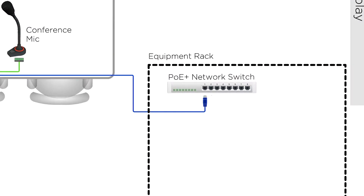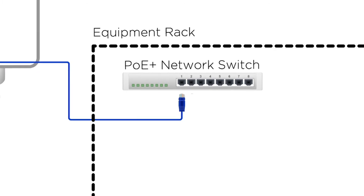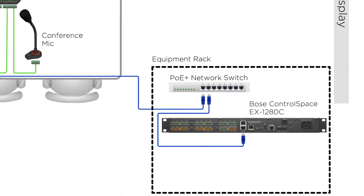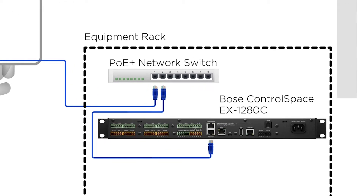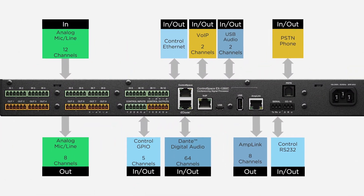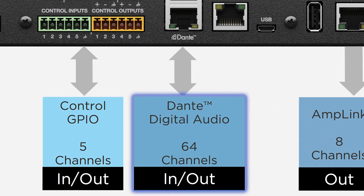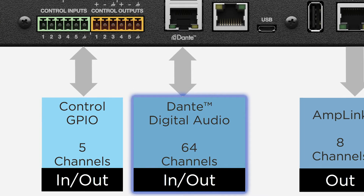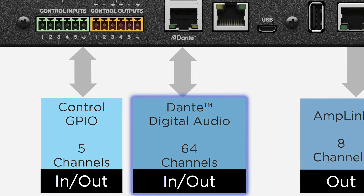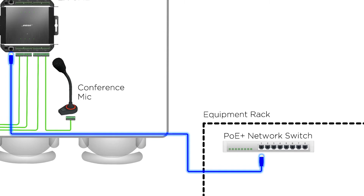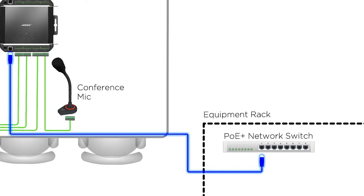The single network cable plugs into a standard PoE Plus network switch, which powers the table endpoints. From the switch, a single network cable connects to the powerful Bose EX1280C processor. As seen in the diagram, it incorporates 64 digital audio inputs and 64 digital audio outputs using industry-standard Dante network audio transport. In our system example, all audio sources from the table are connected via the single network cable to the AV rack, making for a quicker installation with no hums or soldered connections.